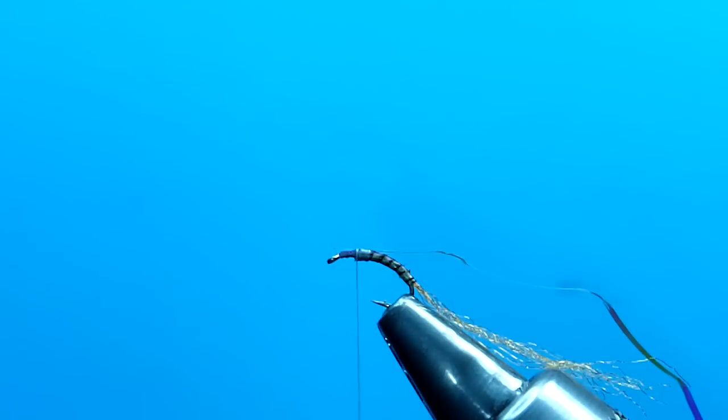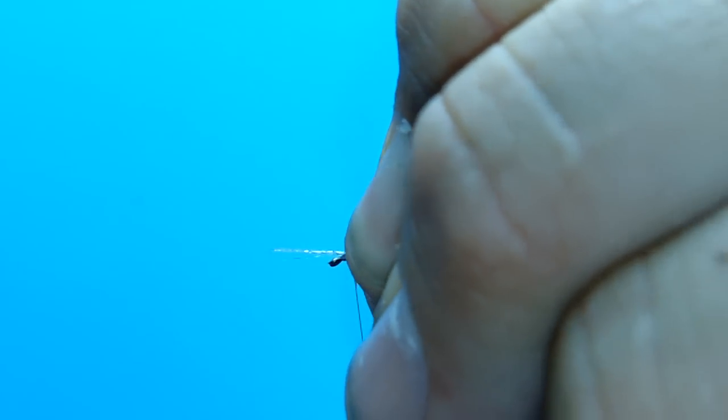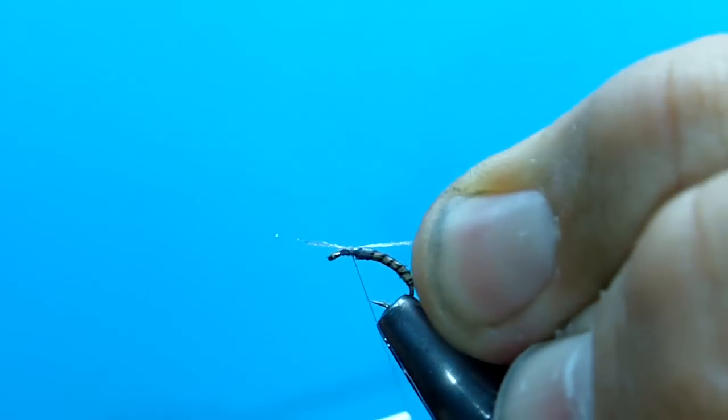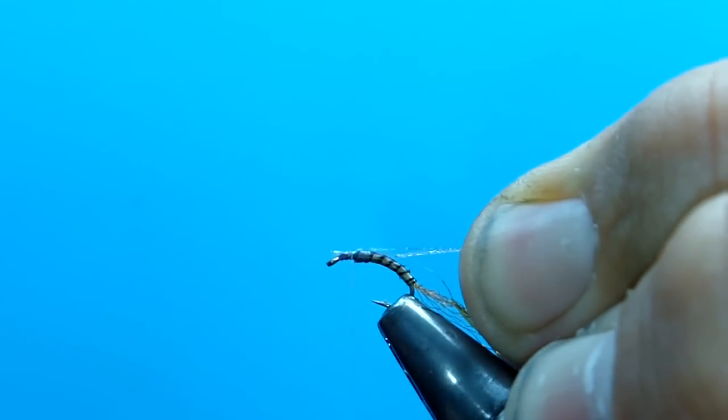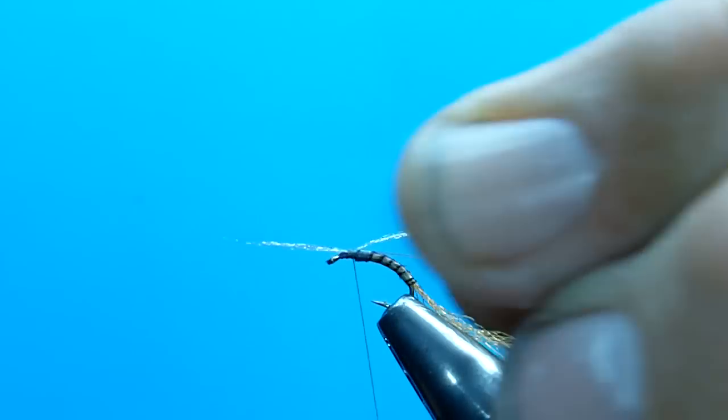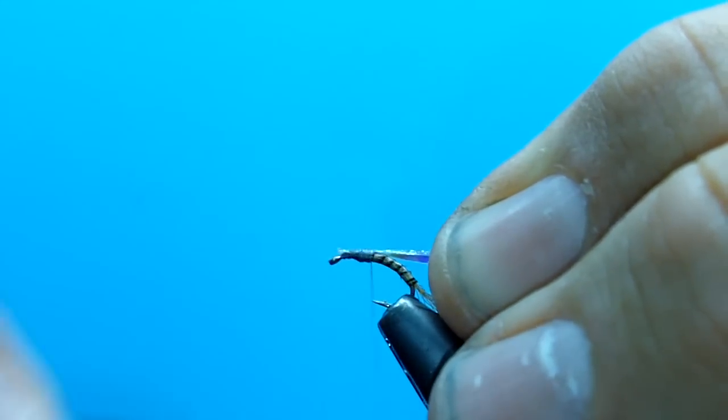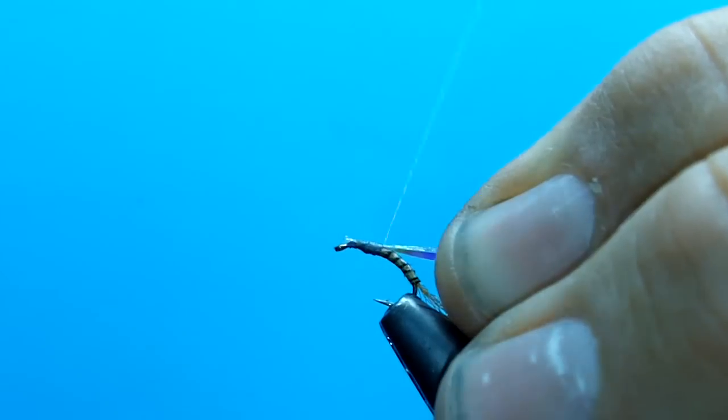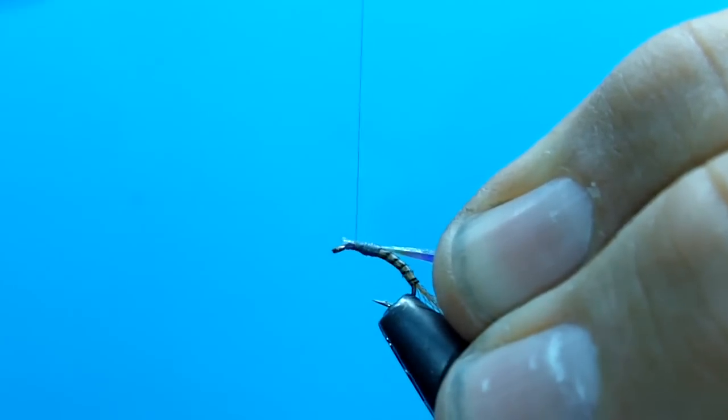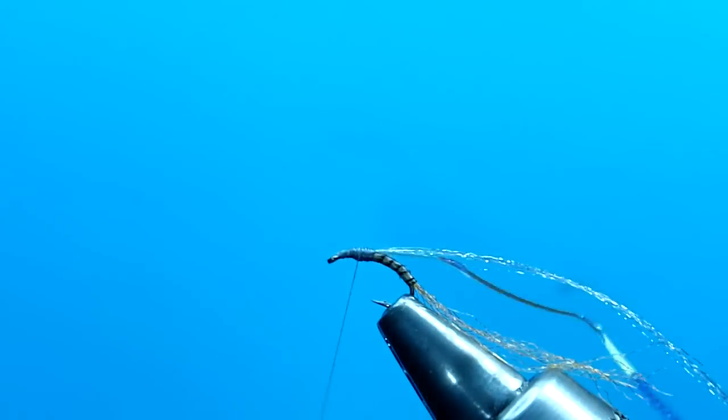And then the second one is some gray floral fiber. We're going to come in here and clip this. Alright, let's bind all that down. The proportions on this fly I like are about 40% on the thorax, 60% on the abdomen.